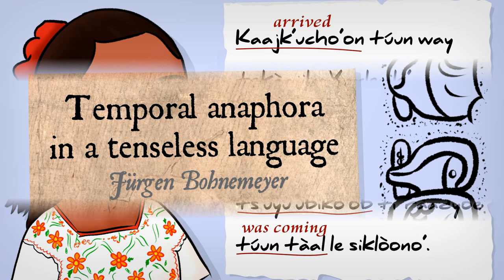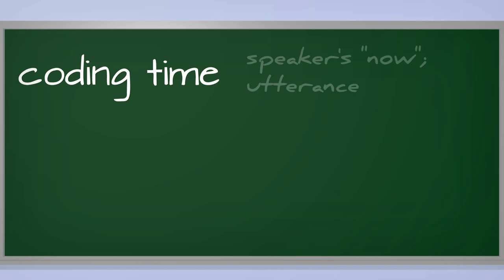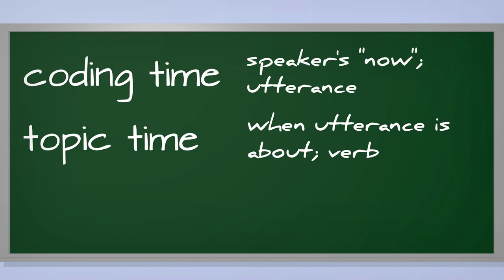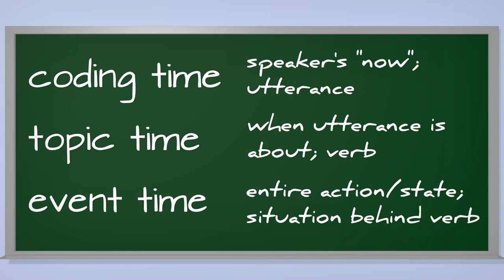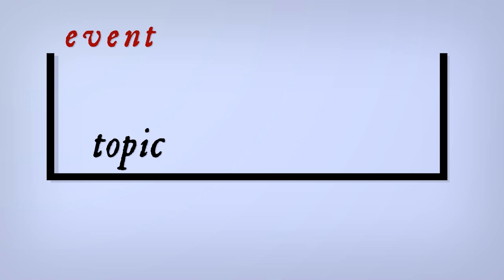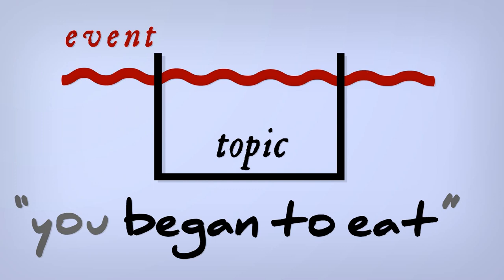To reach it, though, we have to stretch beyond our comfortable time words and learn new ones. First, coding time, that's when you're speaking. Next, topic time, the window of time you're focused on. And event time, the total time of the event you're talking about. Topics versus events, it's getting abstract. Say your event is eating. You could make your topic the start of the eating, somewhere in the middle of the eating, the end of the eating, even the whole eating action.